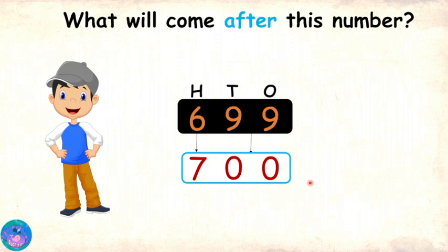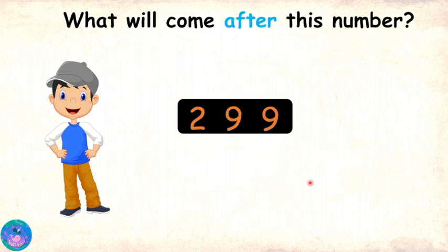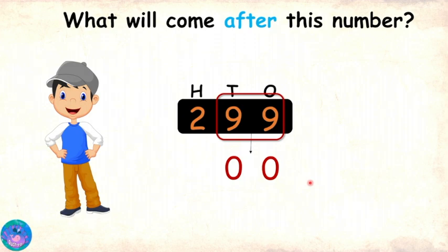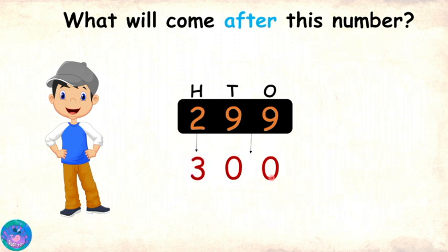Now, do you want to try one number like this? Sure. Can you tell me the successor of two hundred and ninety-nine? Yes, I can. We will start from the second part. The second part is ninety-nine, so the second part of the successor becomes zero zero. And in this case, since the first part of the given number is two, the first part of the successor will become three. So, the successor of two hundred and ninety-nine is three hundred.